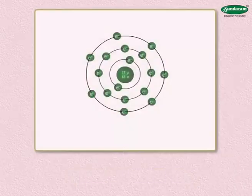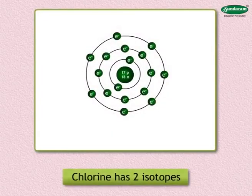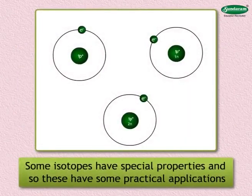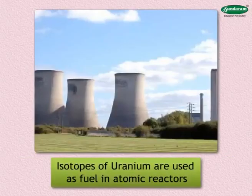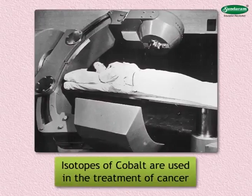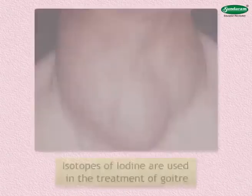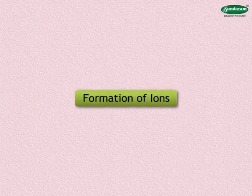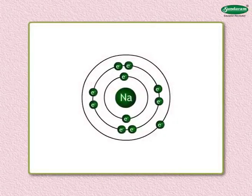Carbon has two isotopes and chlorine has two isotopes. Generally, the chemical properties of all isotopes of an element are the same. However, some isotopes have special properties and practical applications: isotopes of uranium are used as fuel in atomic reactors, isotopes of cobalt are used in the treatment of cancer, and isotopes of iodine are used in medical treatments.